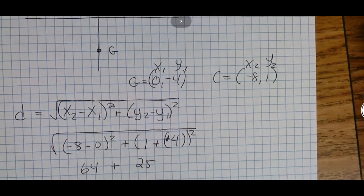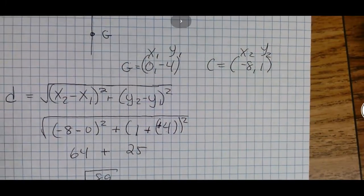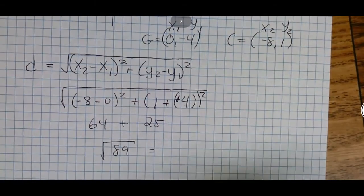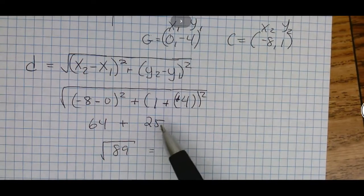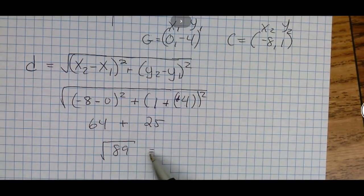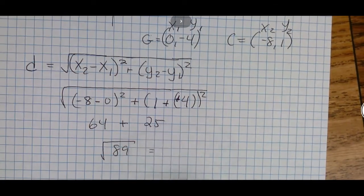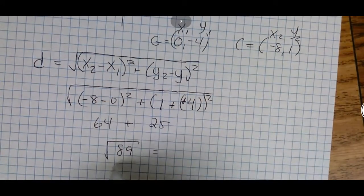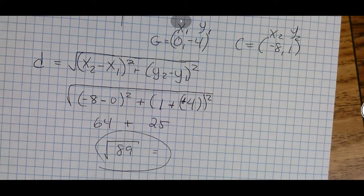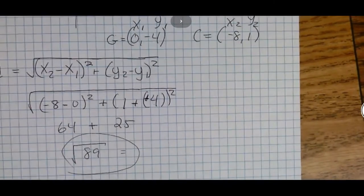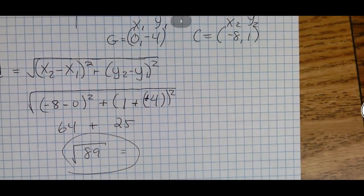Then we add these together: 64 + 25 = 89. The square root of 89 would be our distance. That's our answer. We could see if there's a perfect square for 89 - 8 times 8 gives us 64, 9 times 9 gives us 81 - so we're not going to have a perfect square. If you want an exact answer, this is really going to be your answer: √89.